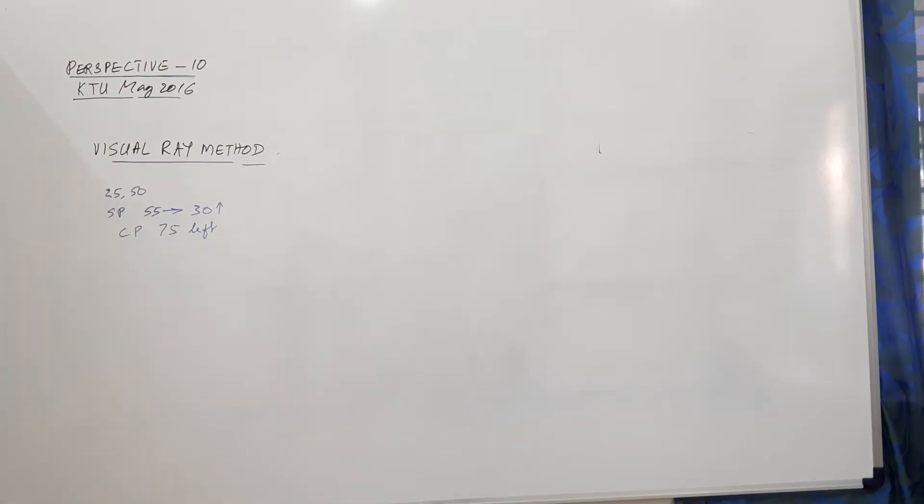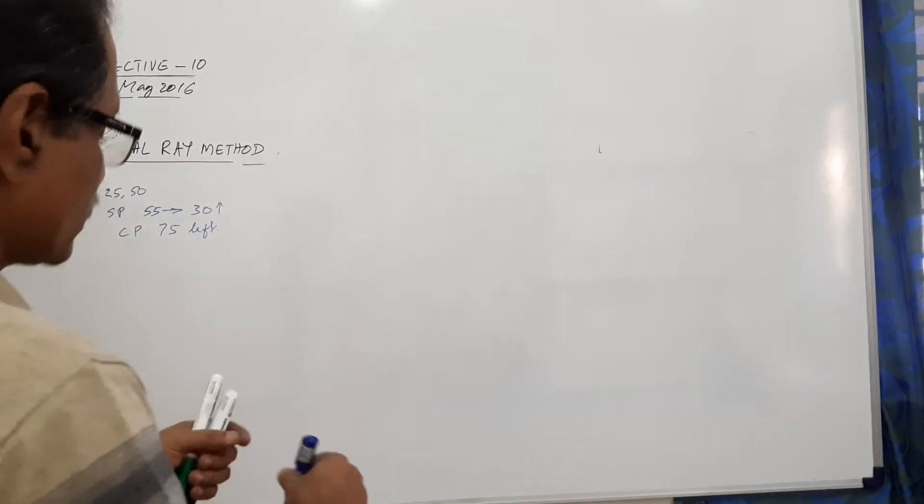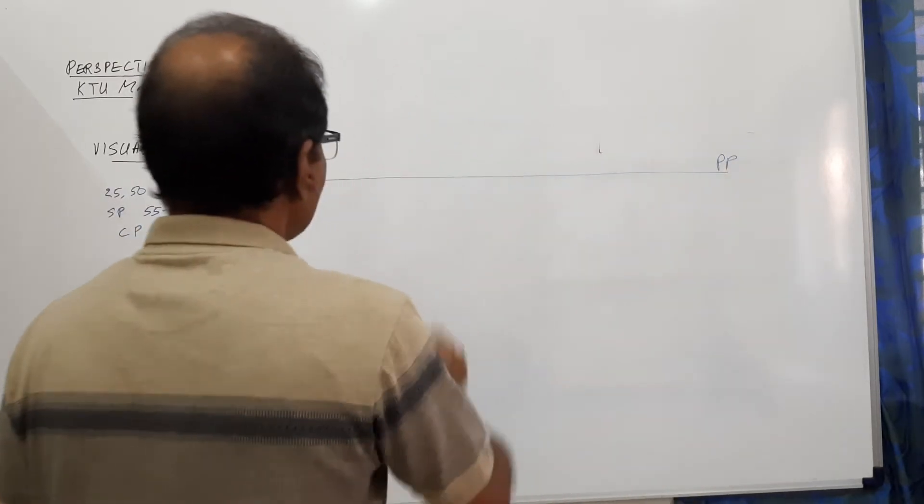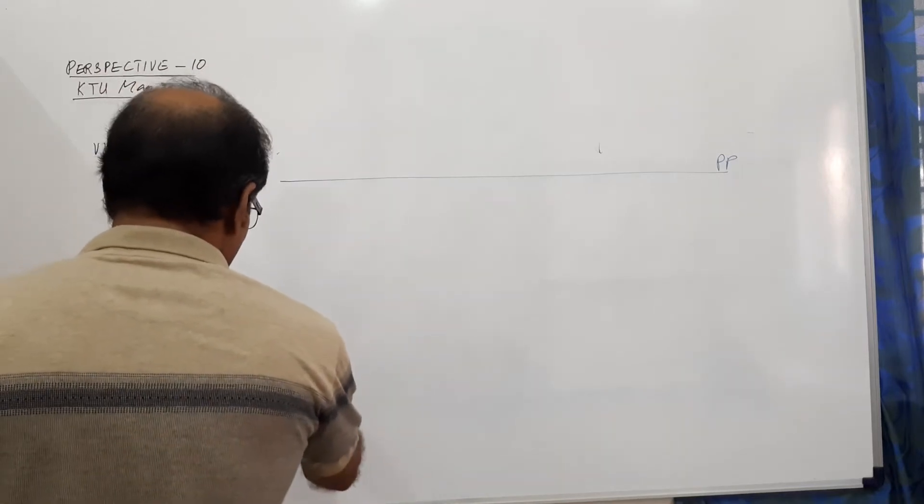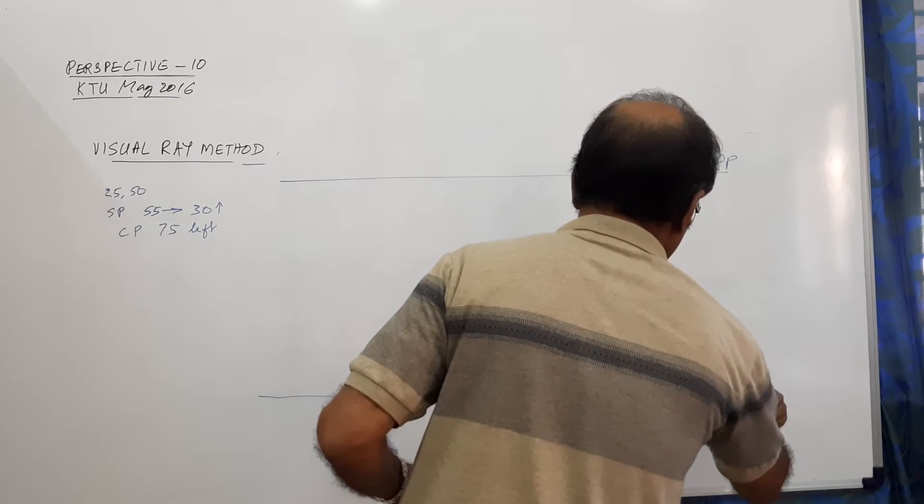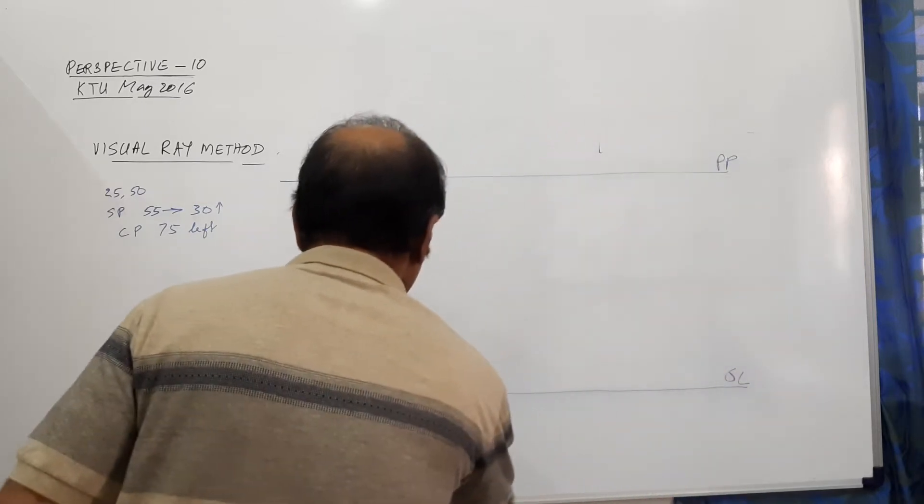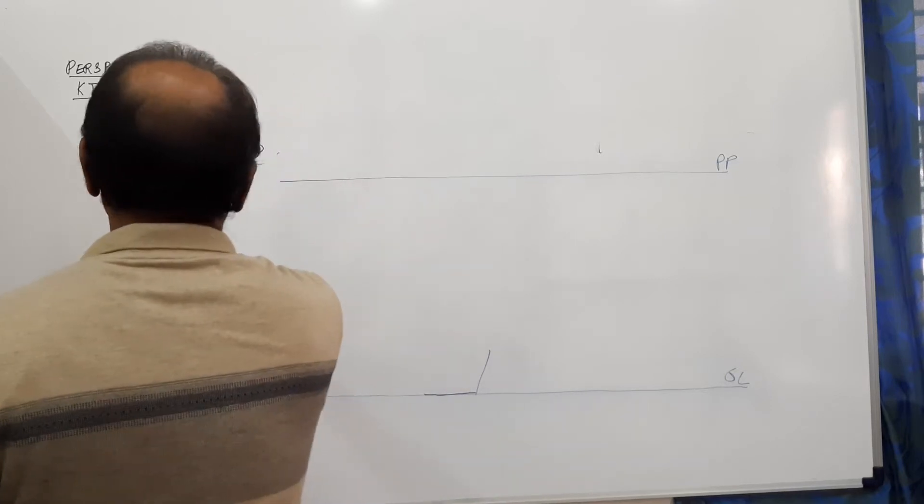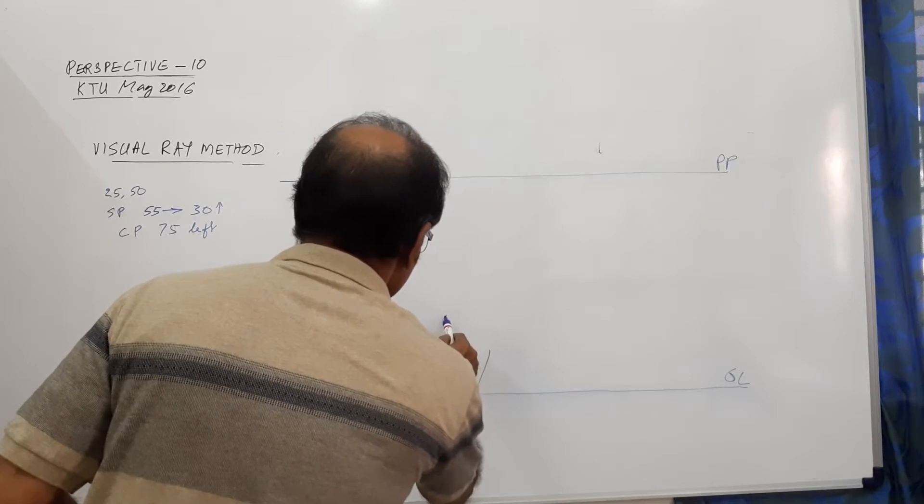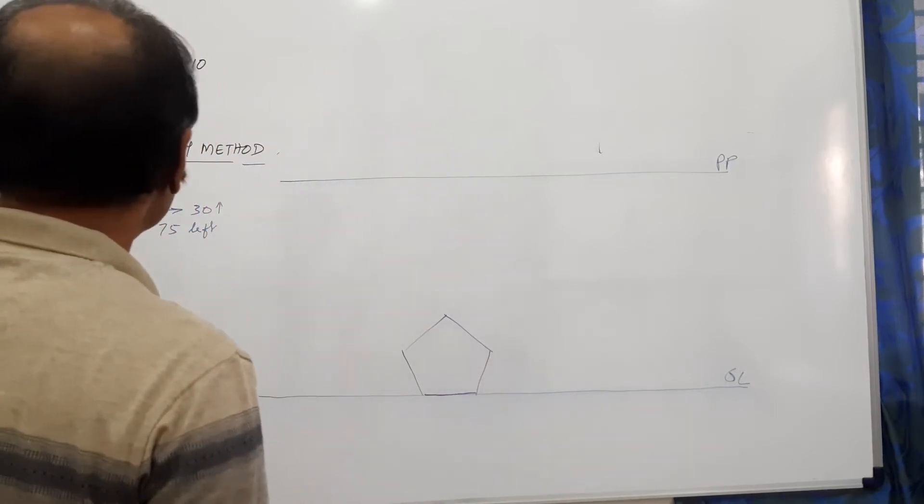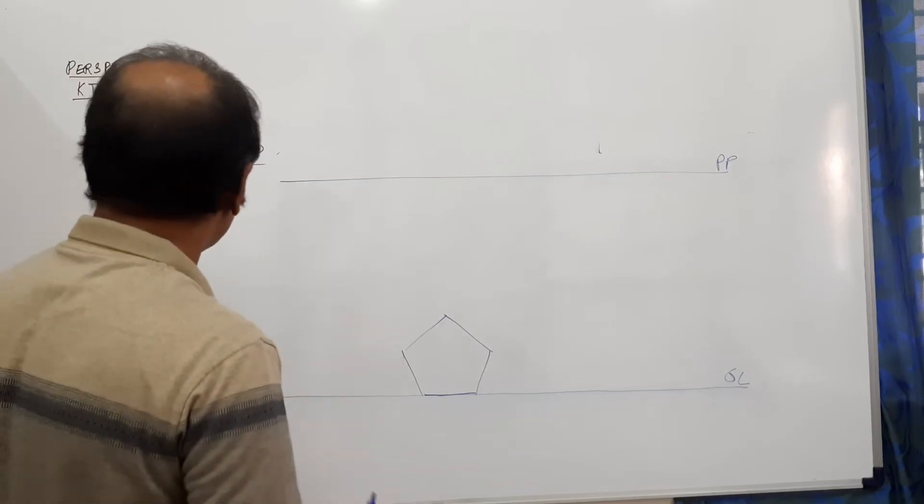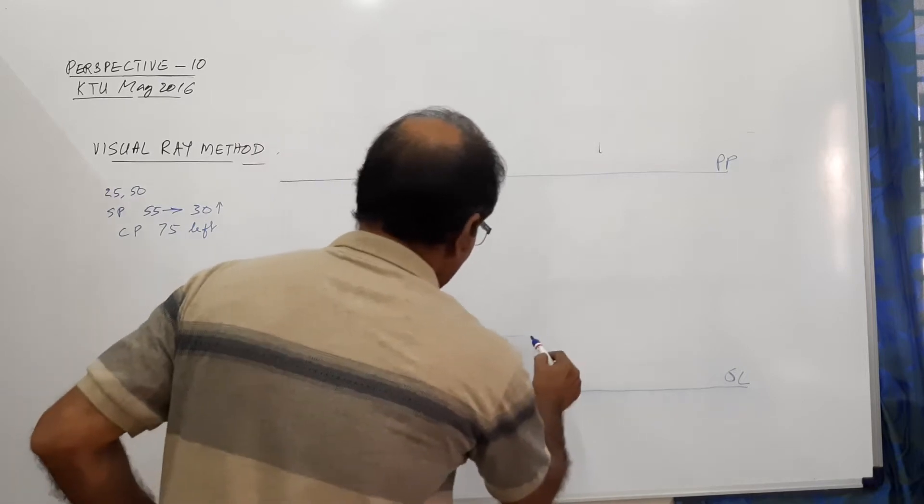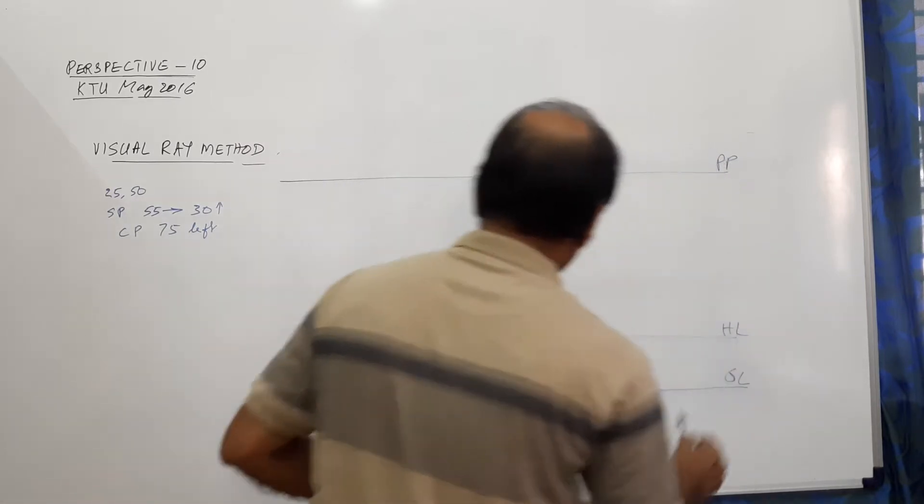Now, we will use visual ray method to draw this. Therefore, I draw picture plane. I have to draw the plan of the prism. Before drawing the plan of the prism, I draw HL here, GL here and I draw a pentagon whose side is 25 mm. This is the pentagon. This is actually the elevation I am drawing. Then, 30 mm above, I draw the HL. I have drawn the HL at GL.